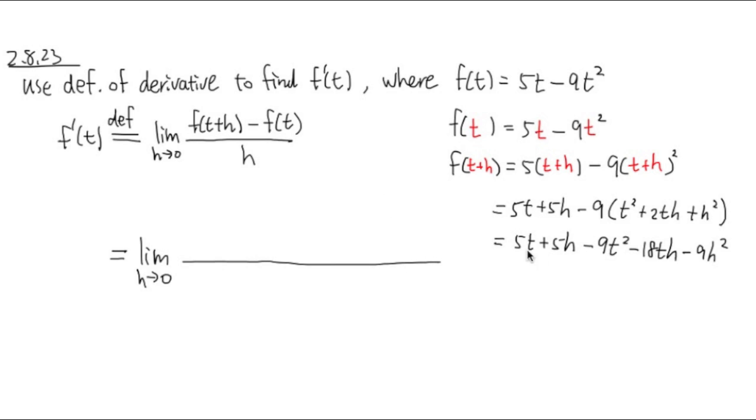So 5t plus 5h minus 9t squared minus 18th minus 9h squared. Once again, this whole thing right here, it's for the f of t plus h.